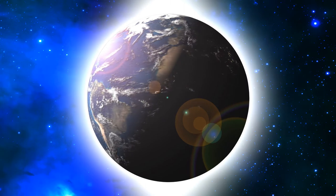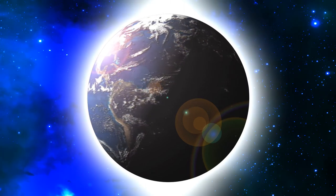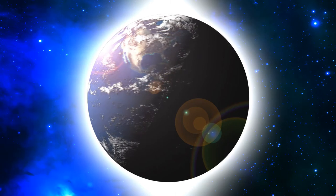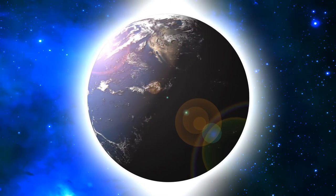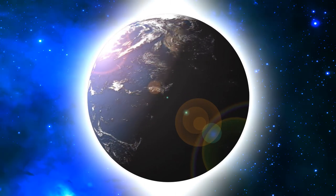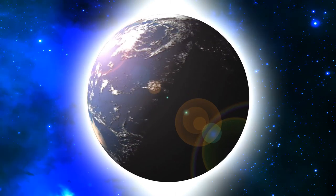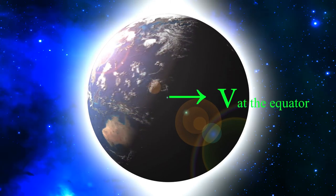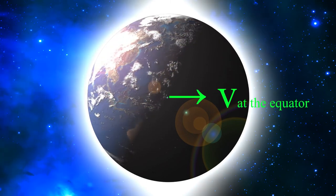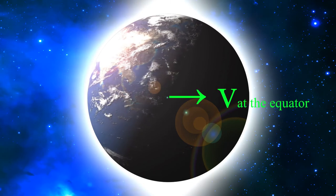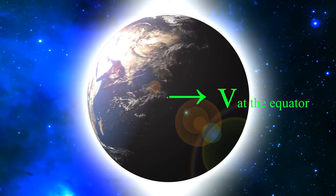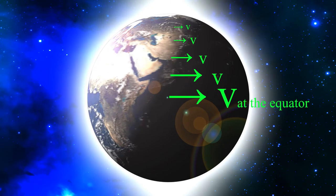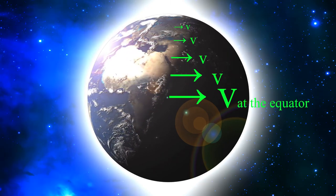The circumference of the Earth is 24,000 miles and it takes 24 hours for the Earth to spin once on its own axis. This means the Earth's equator moves at a speed of 1,000 miles per hour, but the rotational speed at the pole is zero. To take advantage of the Earth's rotational speed, we launch spaceships from as close to the equator as possible.